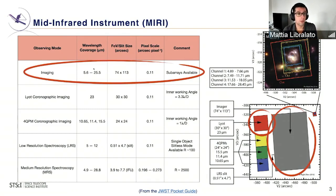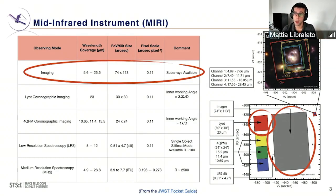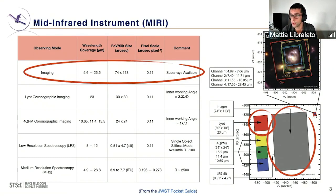On this slide, on the left, there is a table listing all the observing modes offered with MIRI together with a few specs. On the right, you see an overview of the JWST focal plane zoomed around MIRI, showing how the detector is fractionated into different areas according to the observing mode. The slightly different one is the MRS instrument — the small squares on the top right of this plot — which has two dedicated detectors.